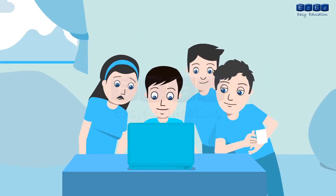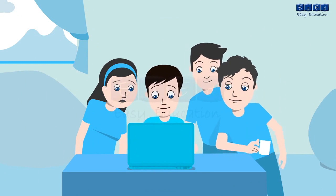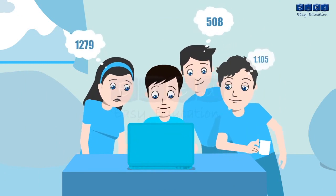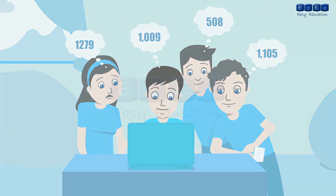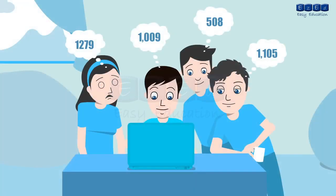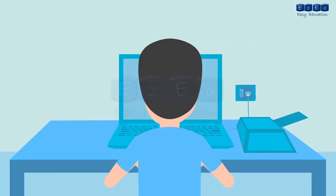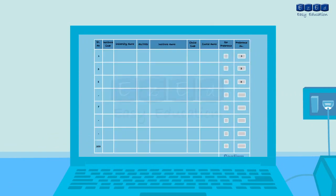A provisional list for all candidates will be displayed on the website and at the ARCs. It only gives the relative position of the candidate and does not guarantee admission to any course. The next stage of the admission process consists of filling up the online option form through the candidate's login ID on the website. It is mandatory for all candidates to fill up the option form.